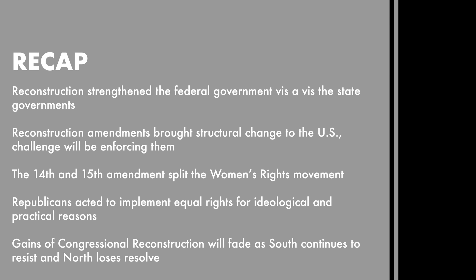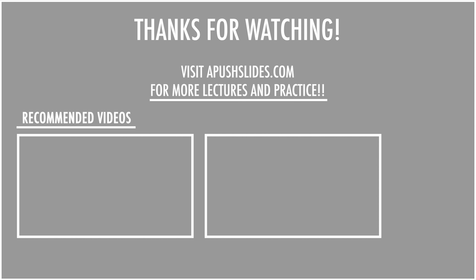Here is the recap: Reconstruction strengthened the federal government vis-à-vis the state governments. Reconstruction amendments brought structural change to the U.S., though the challenge would be to enforce them. The 14th and 15th Amendments split the women's rights movement. Republicans acted to implement equal rights for both ideological and practical reasons. And finally, the gains of Congressional Reconstruction faded as the South continued to resist and the North lost resolve. Thank you for watching. For the next lecture, click the video link on screen, and for more AP exam practice, visit apushlights.com.